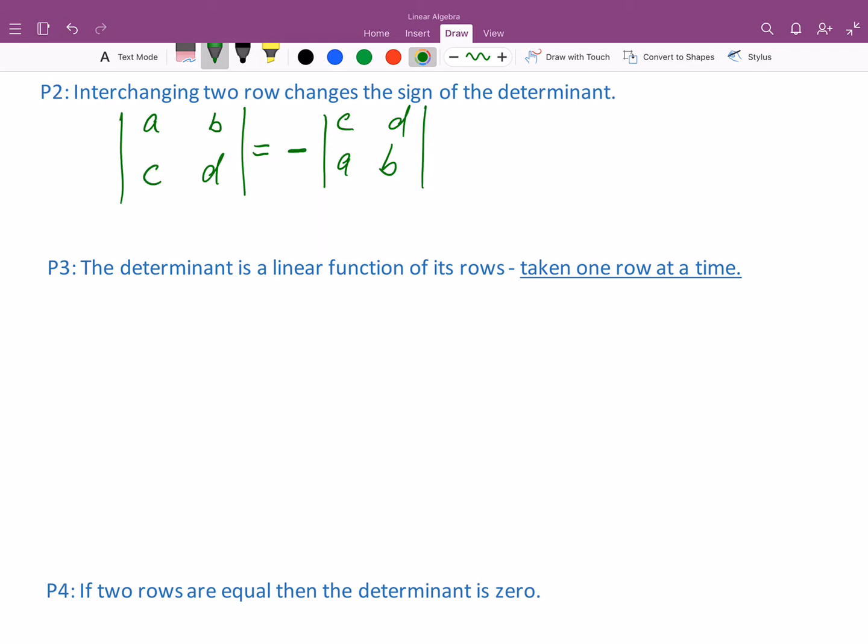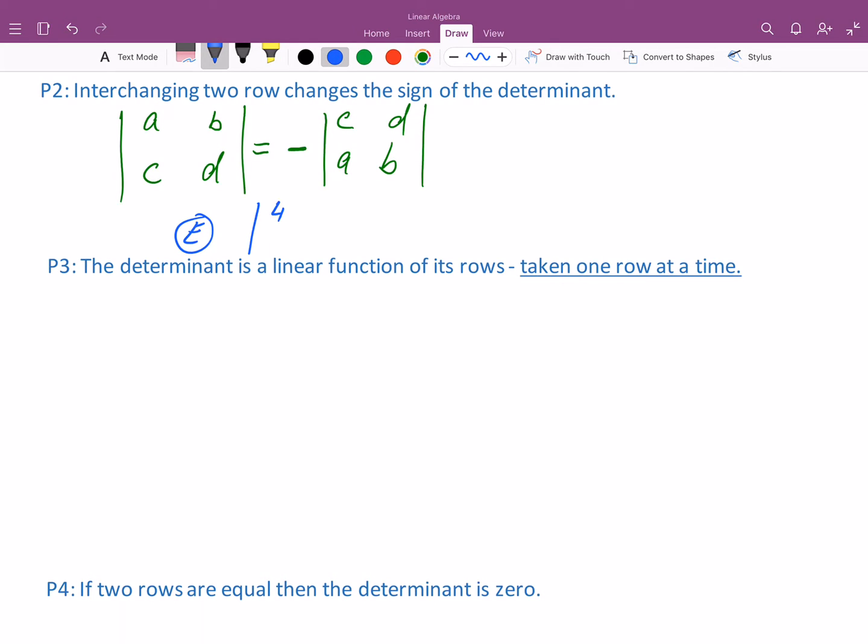So as an example, let's take a look at this determinant 4, 3, 1, 2. We know the formula for determinant here is just multiply the diagonal entry, that's 8, and then the other side that's 3, and then subtract them and that's 5. Now if I were to take 1, 2, 4, 3, so I'm just interchanging the rows, and I apply the formula again, 1 times 3 is 3, 2 times 4 is 8.